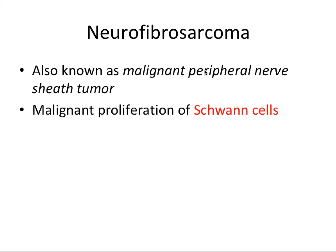Next, we have neurofibrosarcoma, which is also known as a malignant peripheral nerve sheath tumor. And this is a malignant proliferation of Schwann cells. So fibrosarcoma, we had fibroblasts, and now we have Schwann cells.